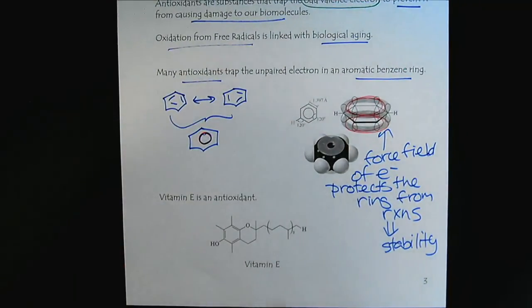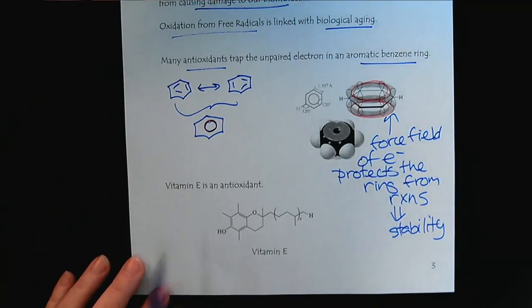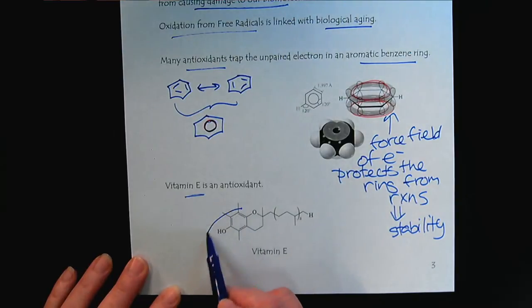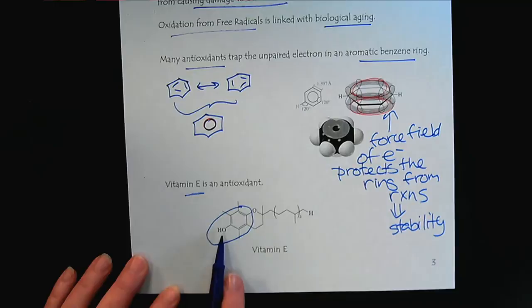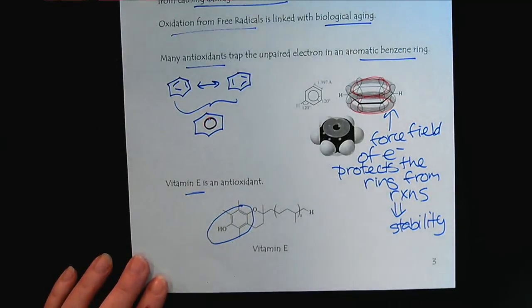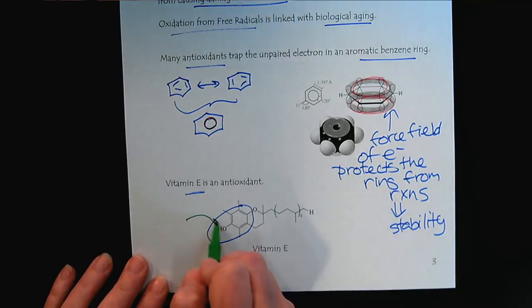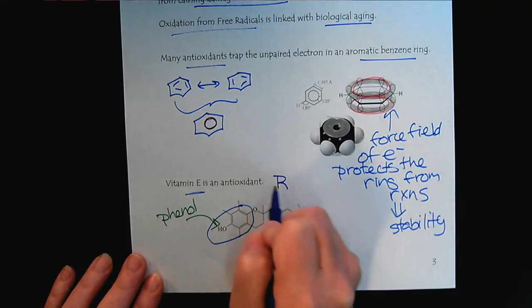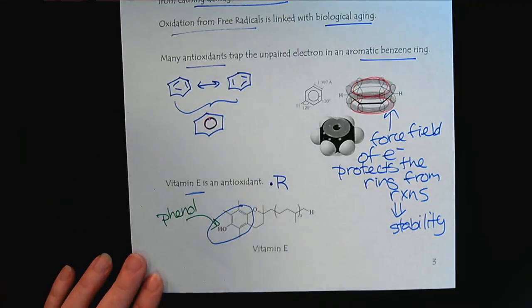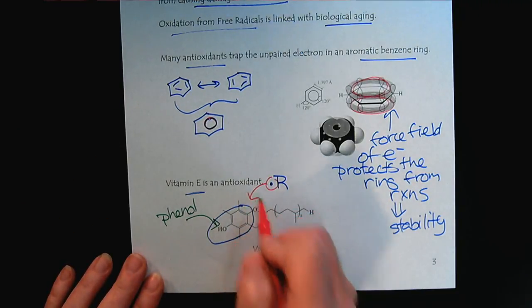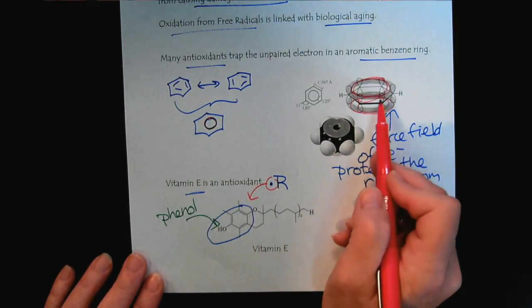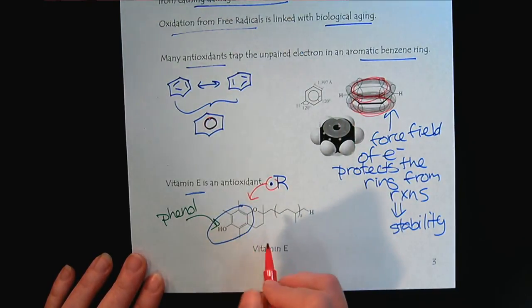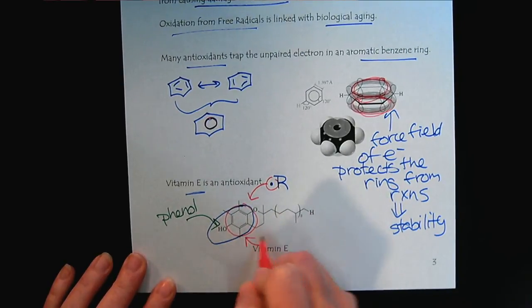We will see that many antioxidants, we'll just use vitamin E as an example. Notice there's a benzene ring, and not only is it common to see benzene rings, but also what functional group? When we have an alcohol group on a benzene ring, we call that a phenol. What happens is that radical with its unpaired electron, that unpaired electron can get trapped in the force field of the double bond rings forming. So the aromatic ring traps the radical, traps that lone electron.